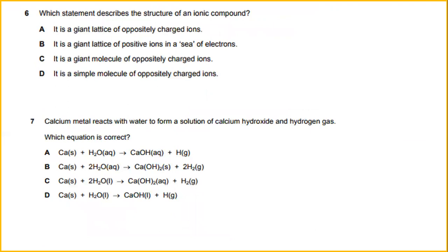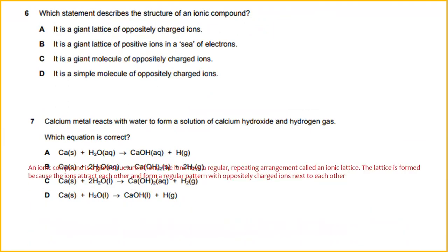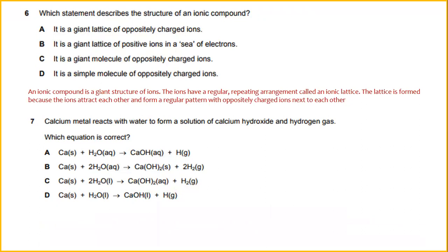Which statement describes the structure of an ionic compound? An ionic compound is a giant structure of ions. The ions have a regular repeating arrangement called an ionic lattice. The lattice is formed because the ions attract each other and form a regular pattern with oppositely charged ions next to each other. The answer would be A: it is a giant lattice of oppositely charged ions.